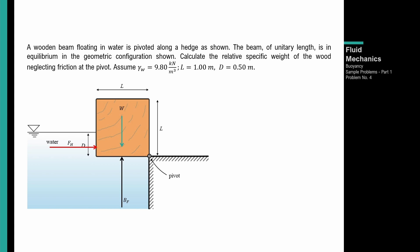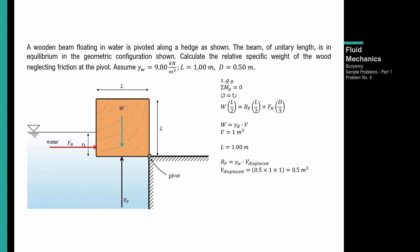Ang kailangan yung relative specific weight or specific gravity ng beam. Summation ng moment sa pivot equal to 0 — counterclockwise equal to clockwise moment. Counterclockwise moment: weight × L/2. Clockwise: buoyant force × L/2 plus hydrostatic force × D/3. Weight equals unit weight ng beam times volume = 1 cubic meter (unitary length, 1 m × 1 m × 1 m). Buoyant force equals unit weight ng water × volume displaced = 9.80 × 0.5 × 1 × 1 = 0.5 cubic meters displaced.